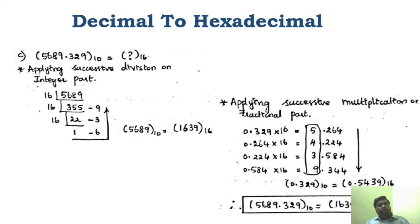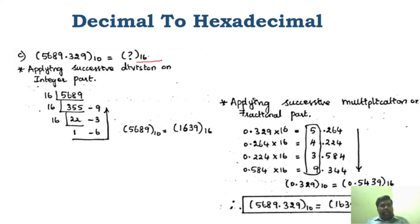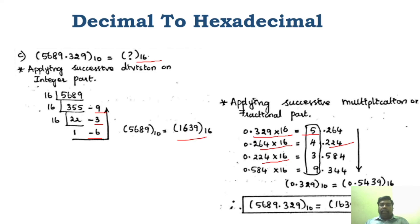For decimal to hexadecimal conversion, use the same steps but divide and multiply by 16. Dividing the integer part by 16 gives remainders: 9, 3, 6, 1 — written bottom to top as 1639. For the fractional part, multiply 0.329 by 16 repeatedly, recording the carries. Stop at 4 digits and write carries top to bottom: 5439. The final hexadecimal answer is 1639.5439 (in base 16).